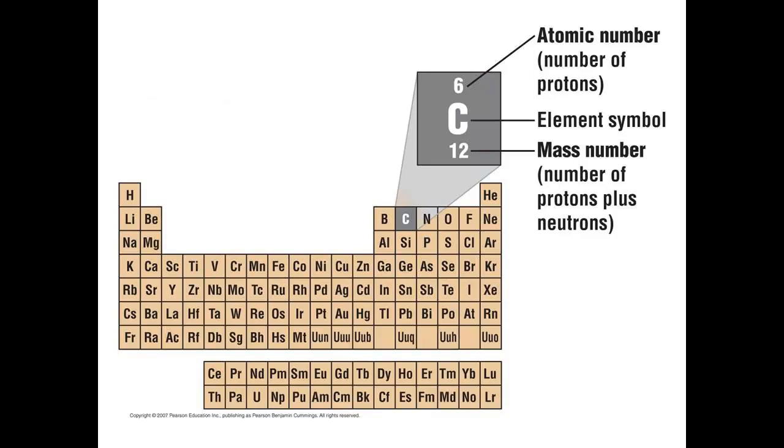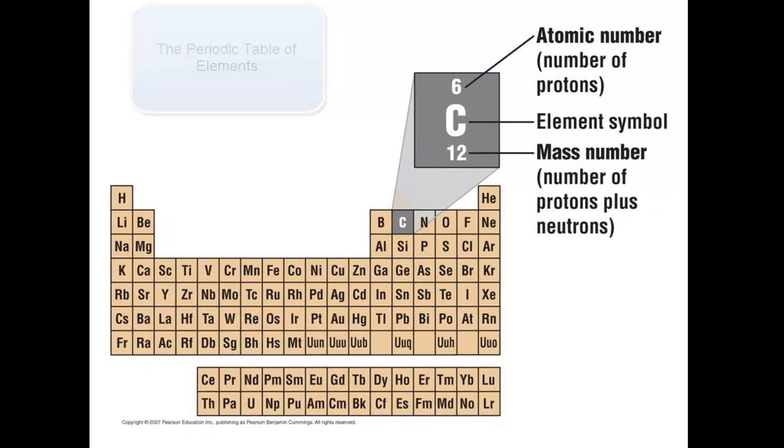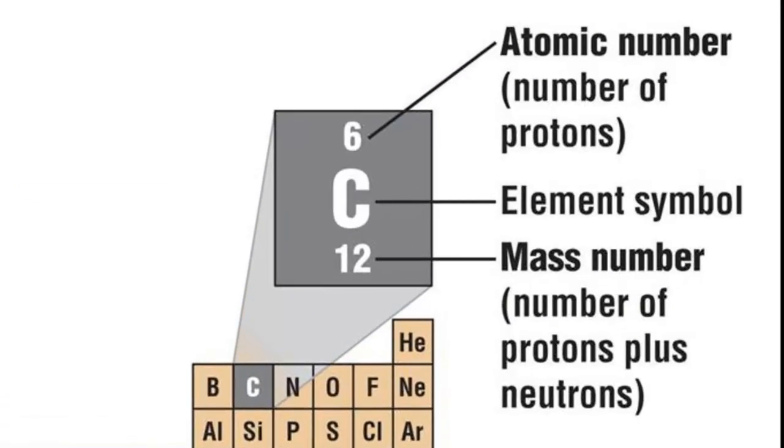Scientists really like to organize things in meaningful ways, and elements are no exception. The elements have been organized into what is called the periodic table of elements. The periodic table gives us a few very important pieces of information about each element: the element symbol, the atomic number, and the mass number.